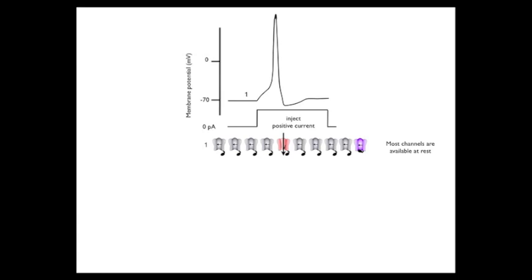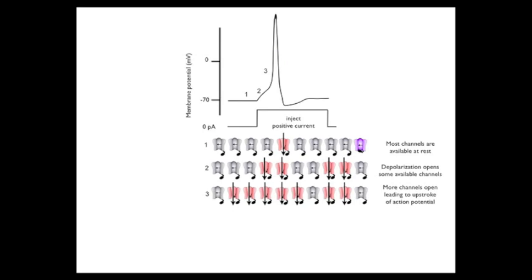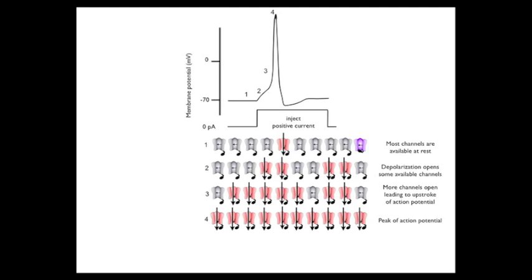A fast injection of positive charges evokes the initial depolarization, position 2, which then opens additional available sodium channels. The opening of the additional sodium channels allows additional positive charges to flow into the cell. The additional influx of positive charges then opens more sodium channels, position 3, generating the upstroke of the action potential. Those open sodium channels bring in even more positive charges, opening even more sodium channels, the sequence ending at the peak of the action potential, position 4.